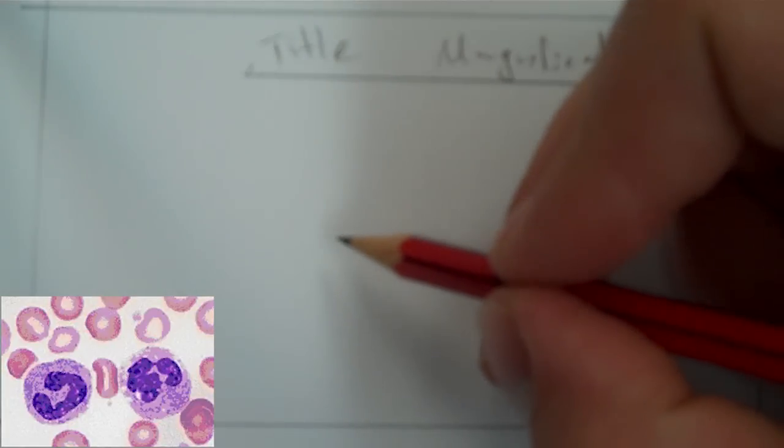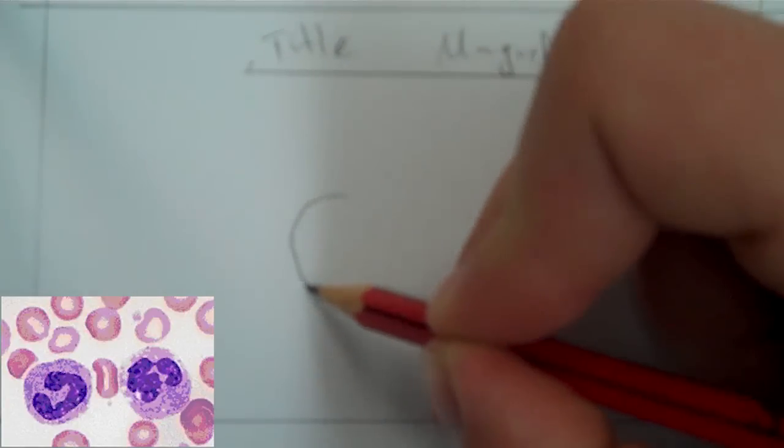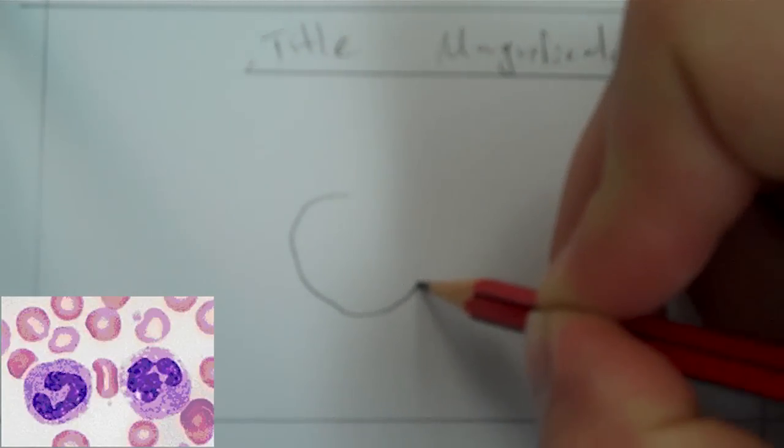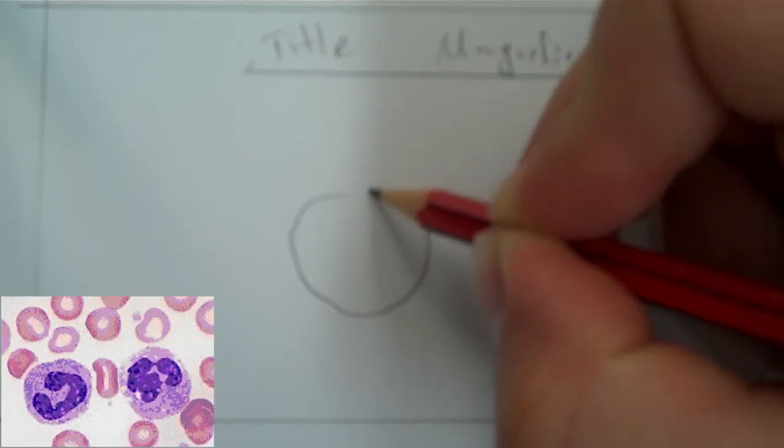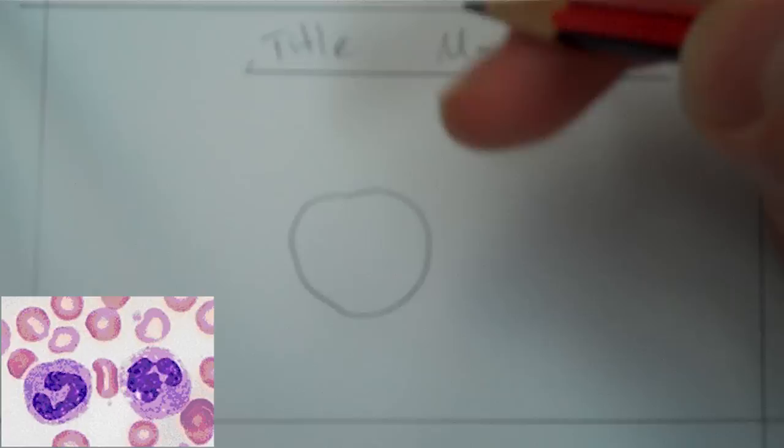So I'm going to start with the white blood cell on the left. It looks pretty round to me, pretty smooth edge. Okay, so I think that'll do.